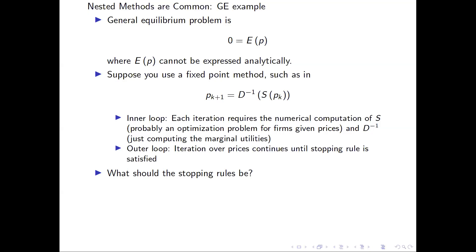In general equilibrium, for example, you need to solve the problem: find the price such that excess demand at that price vector is zero. But you often can't write down the excess demand function in an analytical fashion. So what can you do? Here's an iterative process: you have a supply function, you have a demand function. The supply function, given the prices, is a numerically difficult problem to solve for what the supply is. You have to look at what the firm's optimization problems are at a vector of prices, and that involves solving an optimization problem for them.